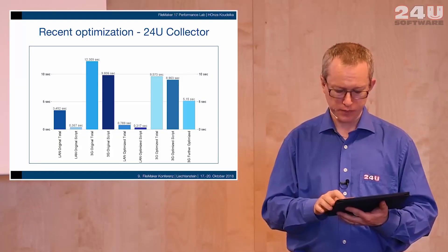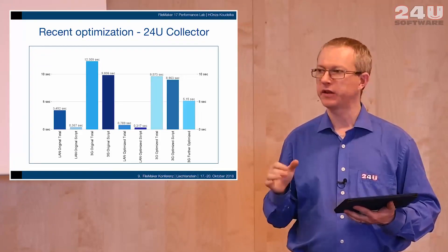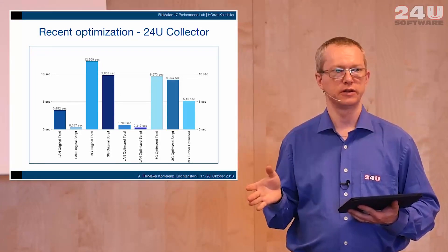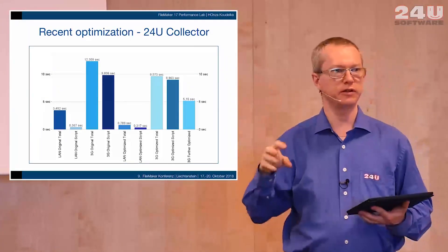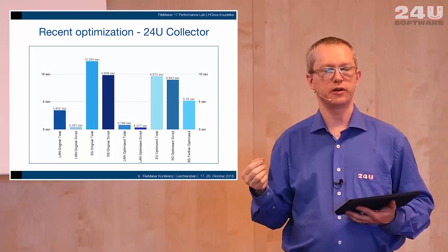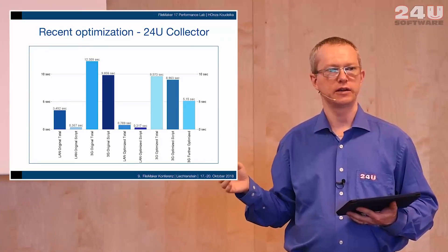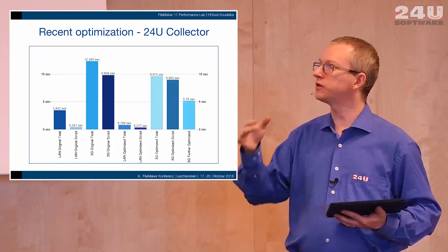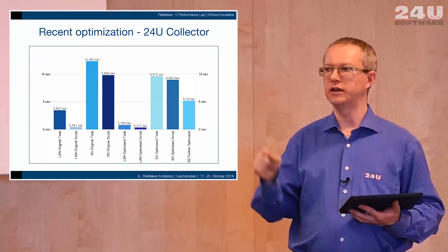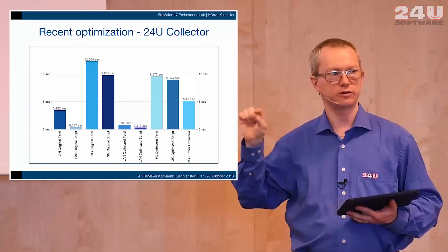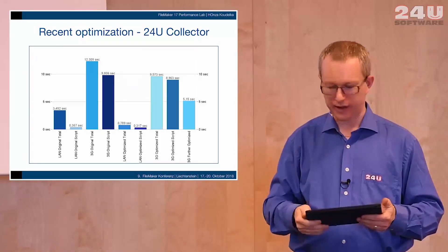So we removed the sorting of the relationship and only kept sorting of the portals. That removed or minimized the gap between the time spent in the script and the refresh, because the sorting then only happened once for each portal. But when it was based on the relationship, because in the portal there was conditional formatting and unstored calculations, every single calculation in that portal triggered another sorting of the relationship. That was causing client calls for every single calculation.